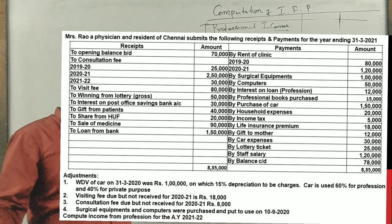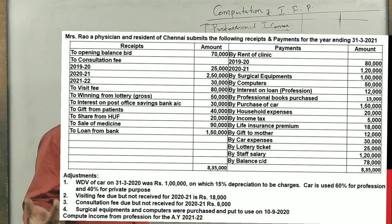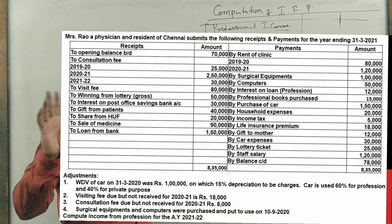Share from HUF don't take it, sale of medicine take it, loan from bank don't take it. Next is rent of clinic for two years to take it, surgical equipment 15% depreciation to be taken, computer 60% depreciation to be taken, interest on loan for profession should be taken, professional books 60% depreciation should be taken, purchase of car 50%.